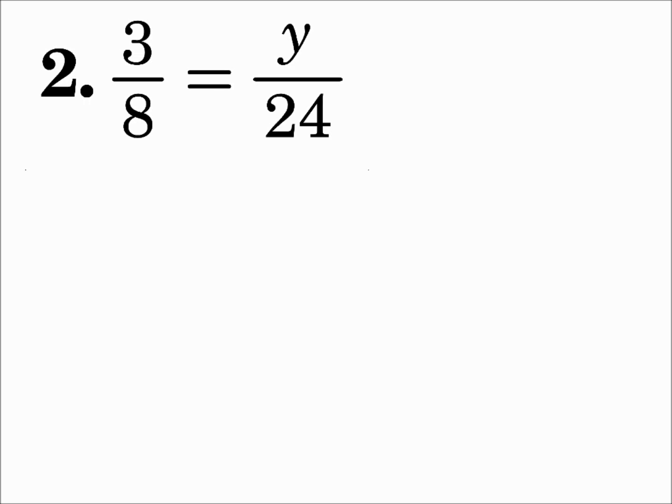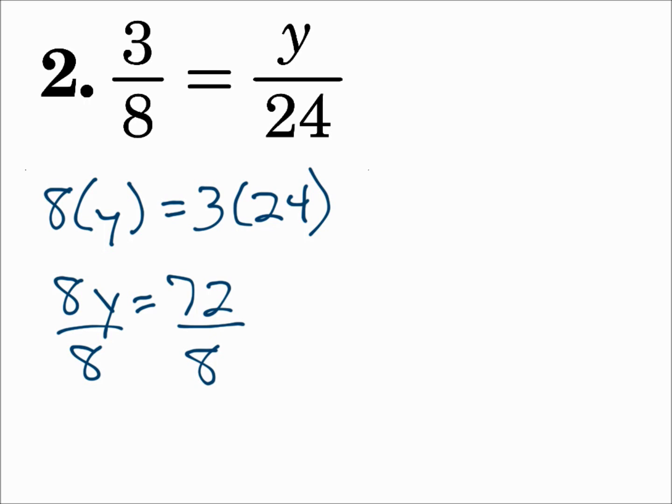Number two. 3 over 8 equals y over 24. To solve the proportion, cross multiply. 8 times y equals 3 times 24. 8 times y is 8y. 3 times 24 is 72. Divide both sides by 8. And y equals 9.